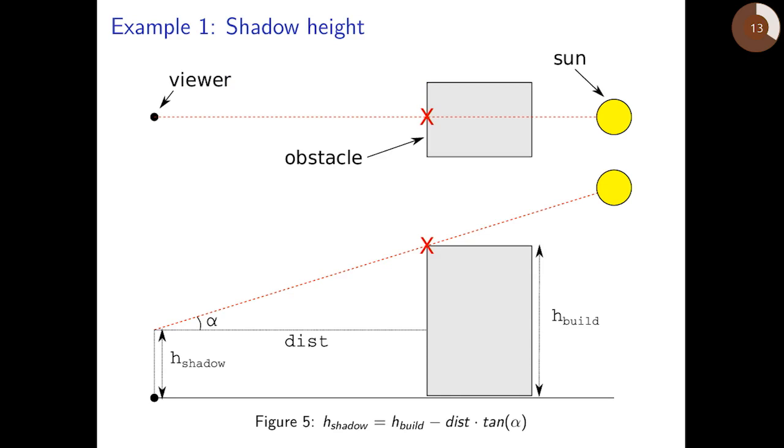The first function calculates shadow height based on this principle. If we have a queried point or the viewer and sun position, either viewed from above or from a cross section, and we have obstacles, to calculate shadow height we first need to determine the intersection points of sun rays with the obstacles.